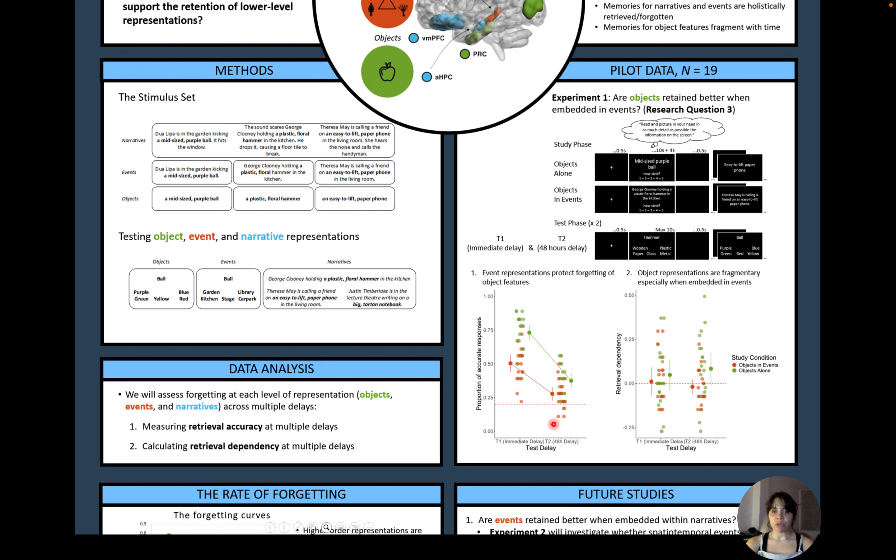Our results from 19 participants demonstrate clear differences between object and event memories. In the immediate testing condition, feature information is better remembered when objects are presented in isolation, likely reflecting better memory for simpler information. Memory for this information, though, decays sharply in the delayed testing condition, more so than when feature information is embedded within events, suggesting that event representations may protect against the forgetting of object features.